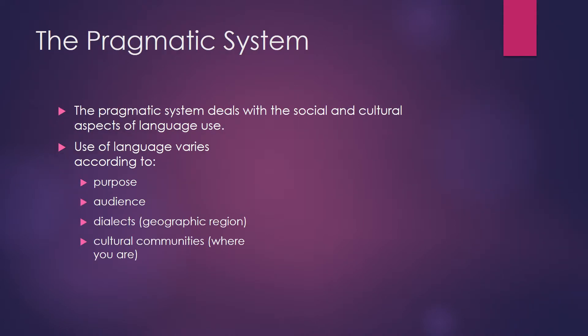The pragmatic system deals with the social and cultural aspects of language — knowing that language varies according to the purpose of what you're speaking or writing for, the audience, various dialects, and the cultural communities of where you are.